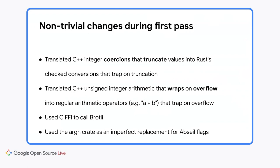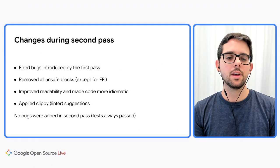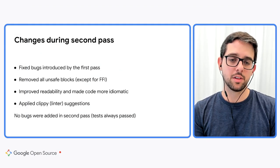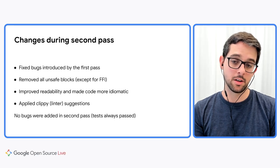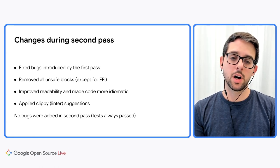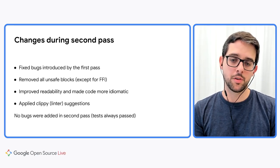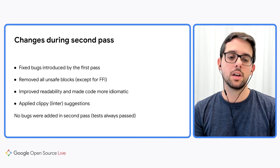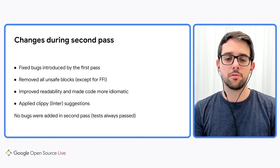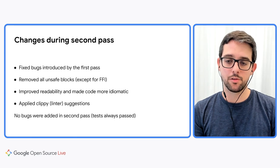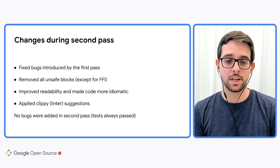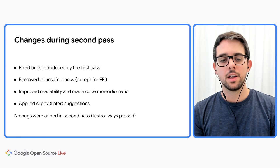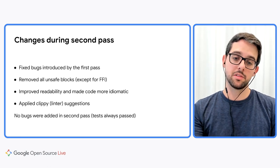I will show you some of these bugs later in the presentation. Among the changes done during the second pass, I fixed bugs found by end-to-end tests at the end of the first pass. I removed all unsafe blocks with the exception of the FFI call to Brotli, which is inherently unsafe. I improved readability and made code more idiomatic, for instance by refactoring all functions that use output params to use results instead. And I applied most Clippy suggestions.